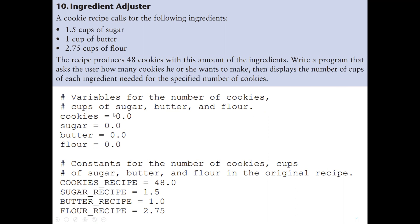First, we need variables to store our data. We need a variable for the number of cookies, and variables for cups of sugar, butter, and flour. Our first variable name is cookies, and we initialize it to 0.0 to make sure there is no data in the variable memory. Next, we have a variable for sugar, butter, and flour. We also have constant values here because the problem gives us amounts.